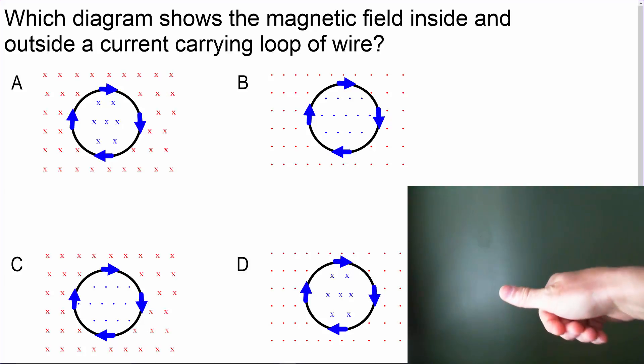Coming back and around, we can see our fingers are pointing out of the page, which is represented by a dot. So X's are inside the loop.